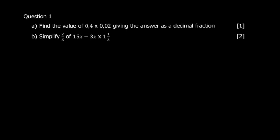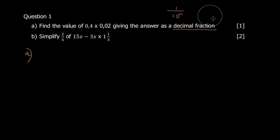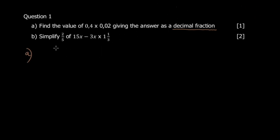Today we're doing the November 2016 paper. The first question says: find the value of 0.4 × 0.02, giving your answer as a decimal fraction. A decimal fraction is any fraction whose denominator is a multiple of 10 — so it can be 10 to the power of something. For example, 2/100 or 3/1,000,000 are decimal fractions, as long as the denominator is a power of ten.